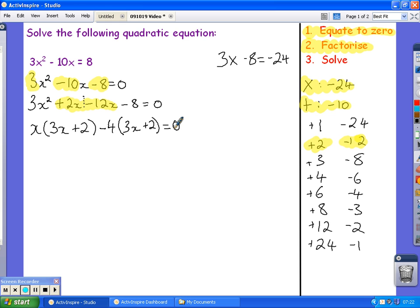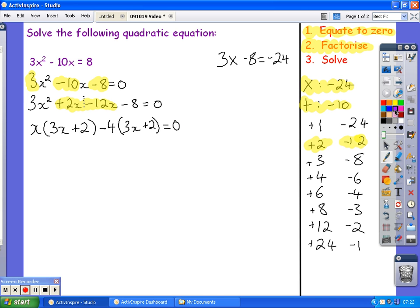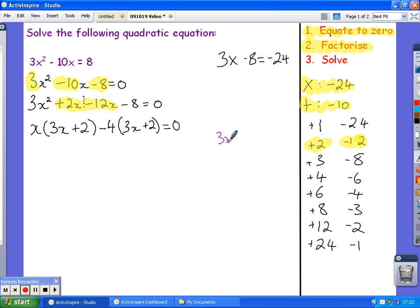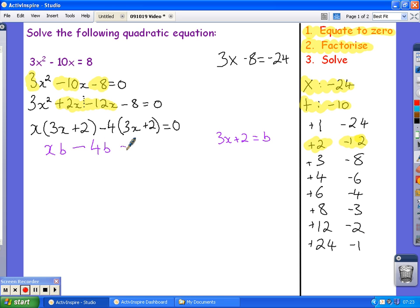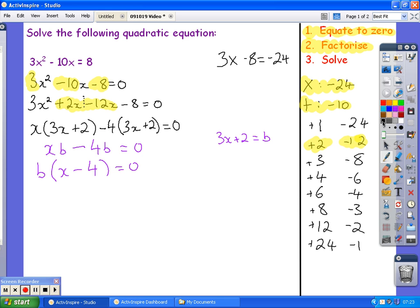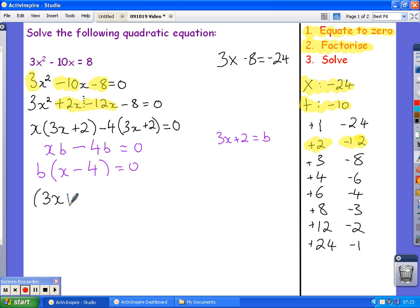And now, if I need to, I could make a little substitution. I could say that 3x plus 2 is going to be something called b. So, now I've actually got x times b, subtract 4 times b equals 0. And I can factorise that very easily. And I know that my b is, in fact, 3x plus 2. So, I'm going to substitute that back in. OK. I've factorised it.